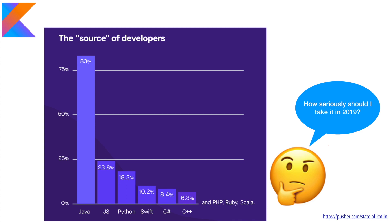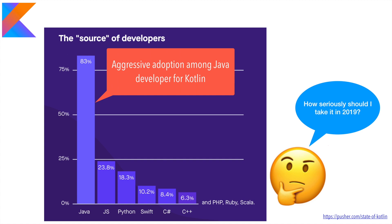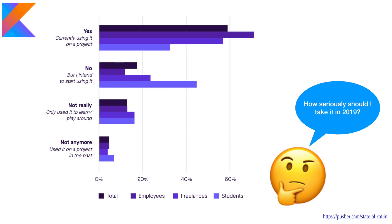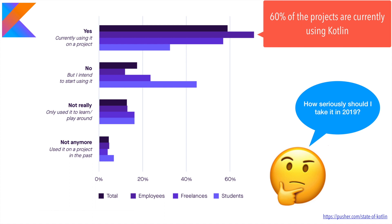Who are the people adopting Kotlin? They come from very different backgrounds like C++, C Sharp, and Swift, but the major aggressive adopters of Kotlin are Java developers. This should not come as a surprise at all, because at the end of the day you are converting your Kotlin code into JVM-compatible bytecode and your Kotlin code works side by side with Java code. When it comes to who is adopting Kotlin for application development, 60% of projects that are currently being done using Java are adopting Kotlin.